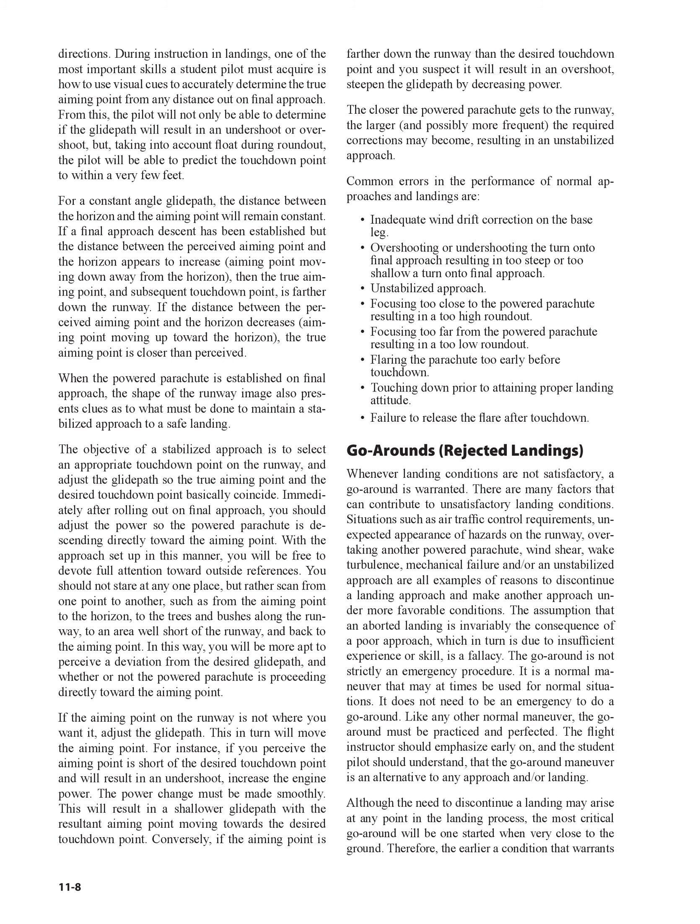Common errors in the performance of normal approaches and landings are: inadequate wind drift correction on the base leg; overshooting or undershooting the turn onto final approach, resulting in too steep or too shallow a turn; unstabilized approach; focusing too close to the powered parachute resulting in a too-high roundout; focusing too far from the powered parachute resulting in a too-low roundout; flaring the parachute too early before touchdown; touching down prior to attaining proper landing attitude; and failure to release the flare after touchdown.